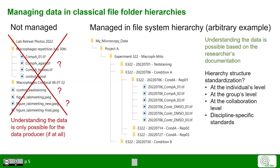However, questions arise like: is the data hierarchy standardized? Did the researcher himself or herself choose the data hierarchy levels? Is there a group standardization or even a collaboration standardization across institutes? Do any discipline-specific standards apply? Moreover, the problem is that no preview and only limited access to metadata is typically provided by file folder hierarchy systems.